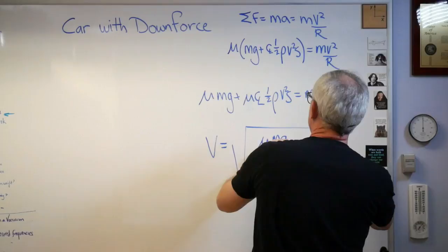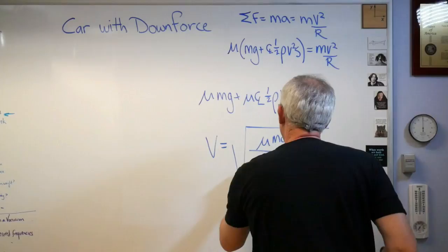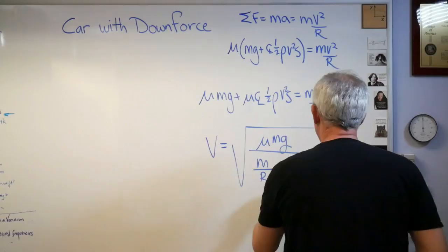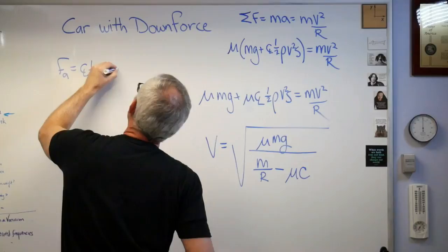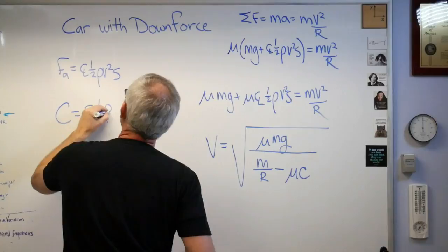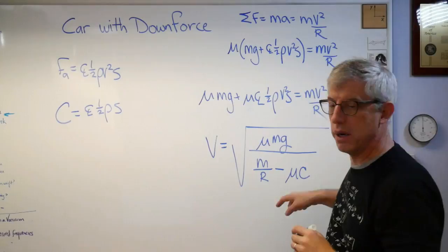Mu MG, that's that term right there, times mass over radius. Give me a minus sign and I've got mu C. Where'd C come from? To try to keep this clean, what I'm doing here is I'm saying that CL one-half rho V squared S, let's make big C equals CL one-half rho S. So that becomes mu C right there.